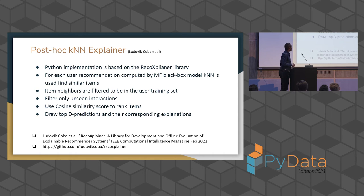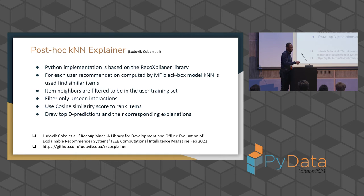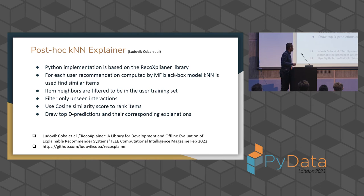The post-hoc KNN approach is similar to the association rules one. The difference is we use K-nearest neighbors as our surrogate rather than association rules. KNN measures similarity between items — here using cosine similarity. For further details, refer to the paper. Results from running this are also shown.